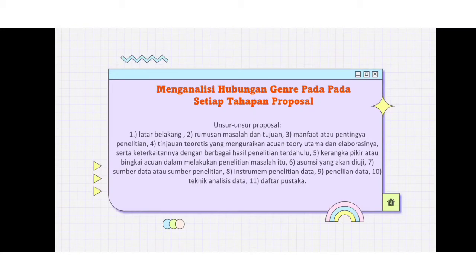Enam, asumsi yang akan diuji; tujuh, sumber data atau sumber penelitian; delapan, instrumen penelitian data; sembilan, penelitian data; sepuluh, teknik analisis data; sebelas, daftar pustaka.